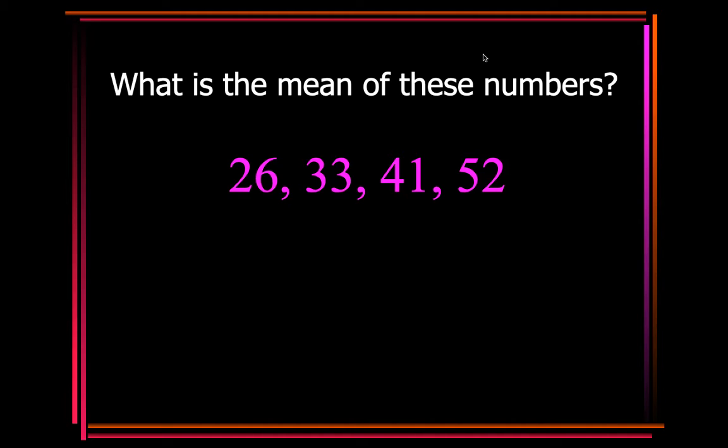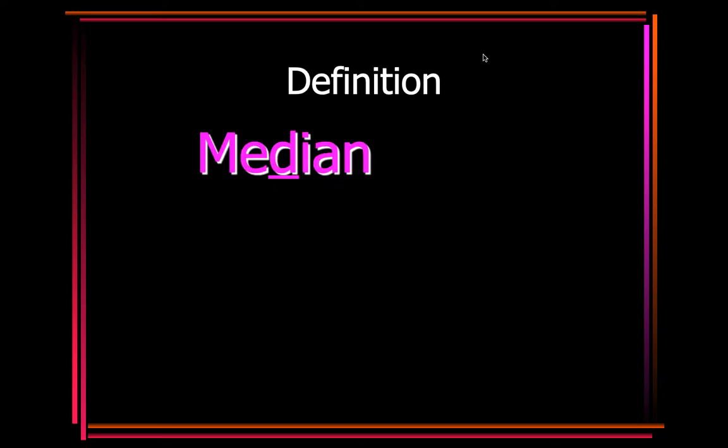What is the total of the four numbers right there when you add them up? You end up with 158, and when you divide 158, you have four numbers in your data set. So you're going to divide it by 4, and you end up with 38.